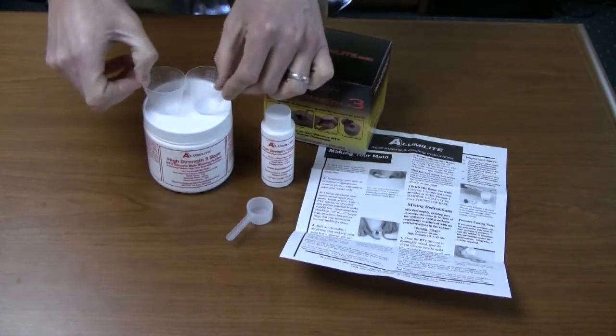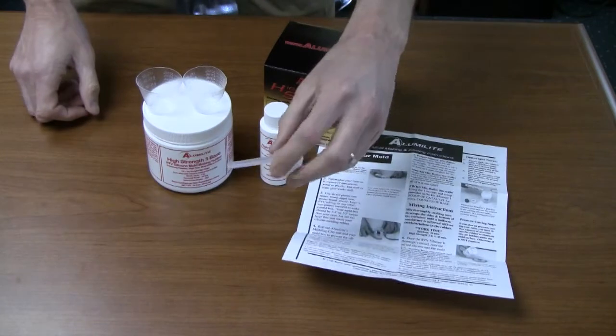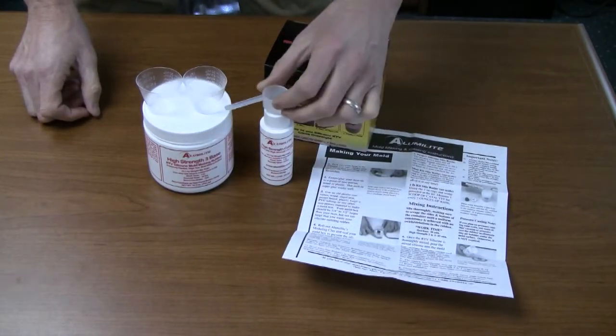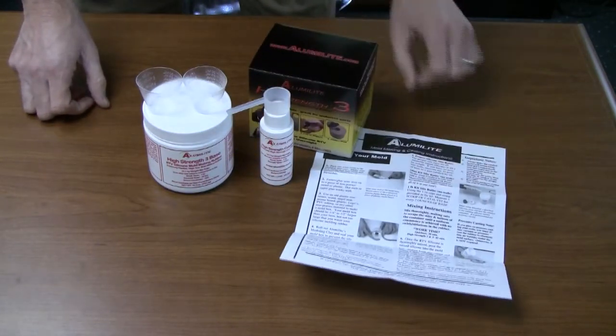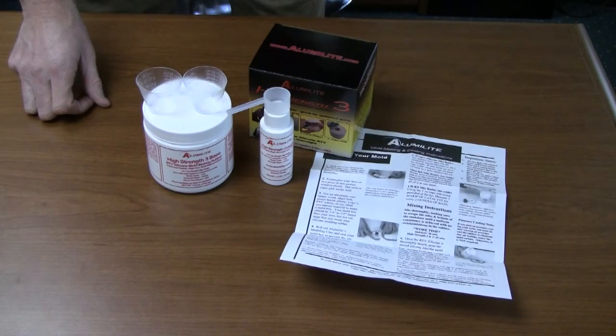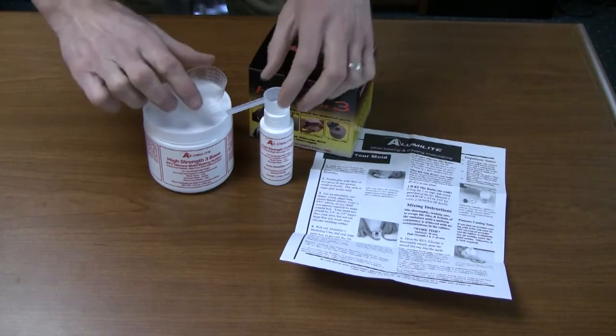They're mixed in a 10 to 1 by weight ratio. If you don't have a scale, simply follow the instructions and mix the material as stated: two ounces of base per one scoop of catalyst.